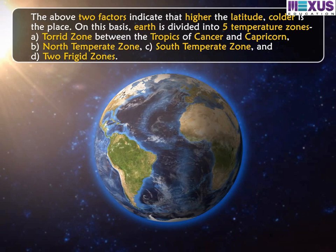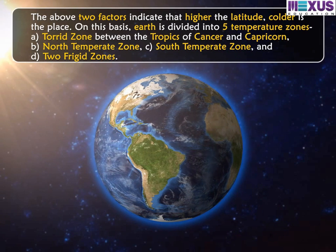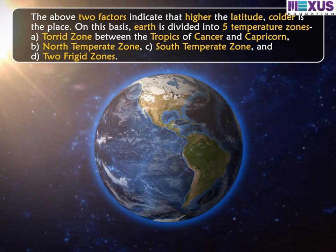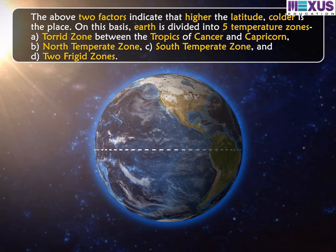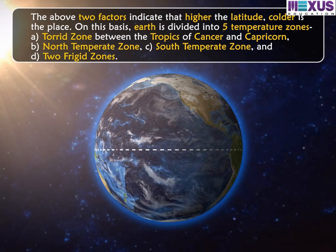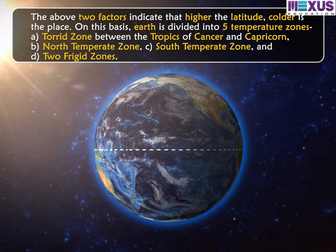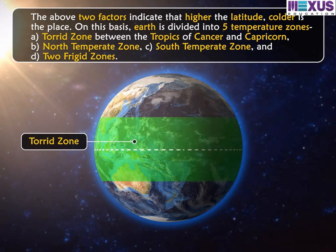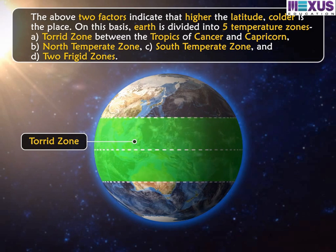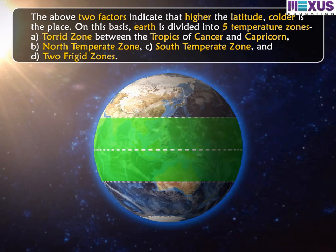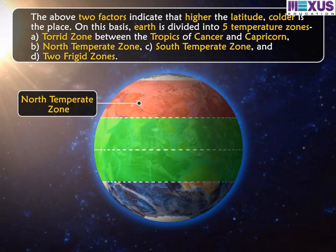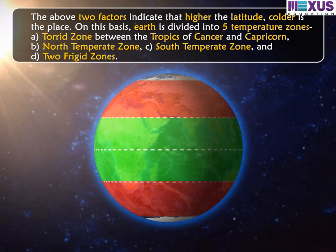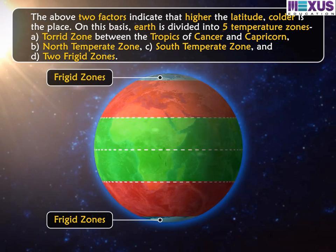These two factors indicate that the higher the latitude, the colder is the place. On this basis, Earth is divided into five temperature zones: A. Torrid zone between the Tropics of Cancer and Capricorn; B. North Temperate Zone; C. South Temperate Zone; and D. The two Frigid Zones.